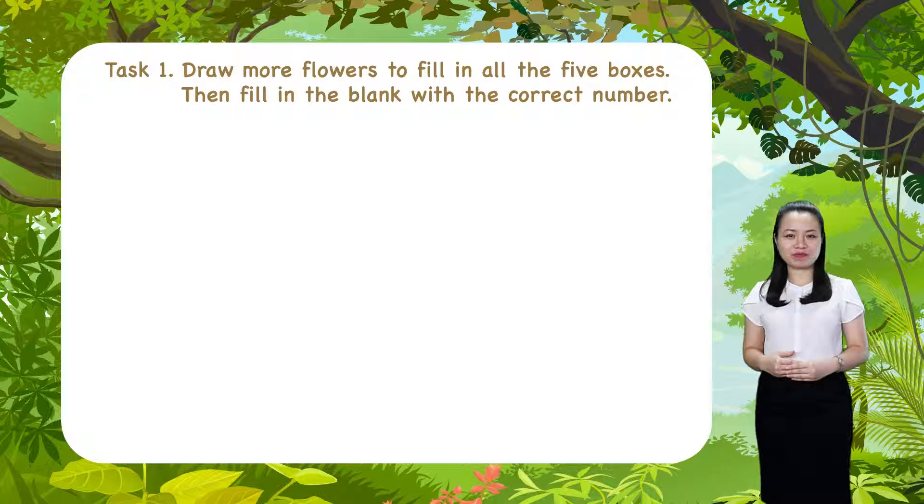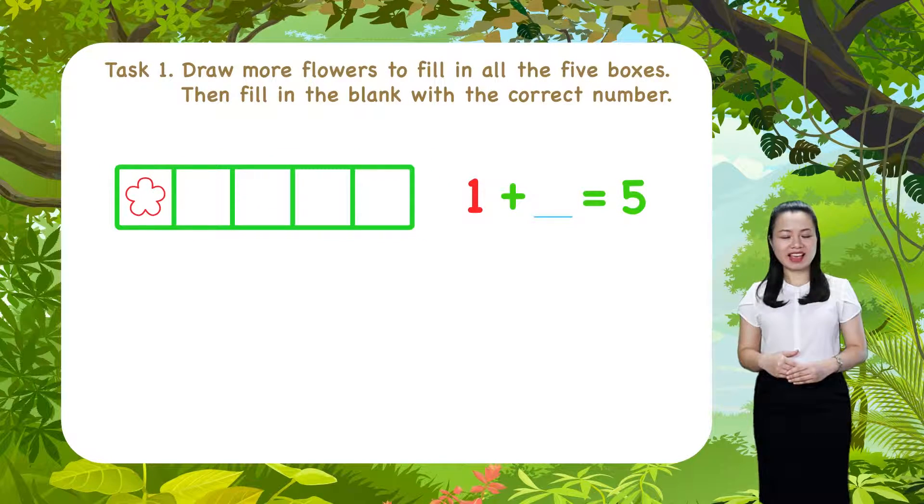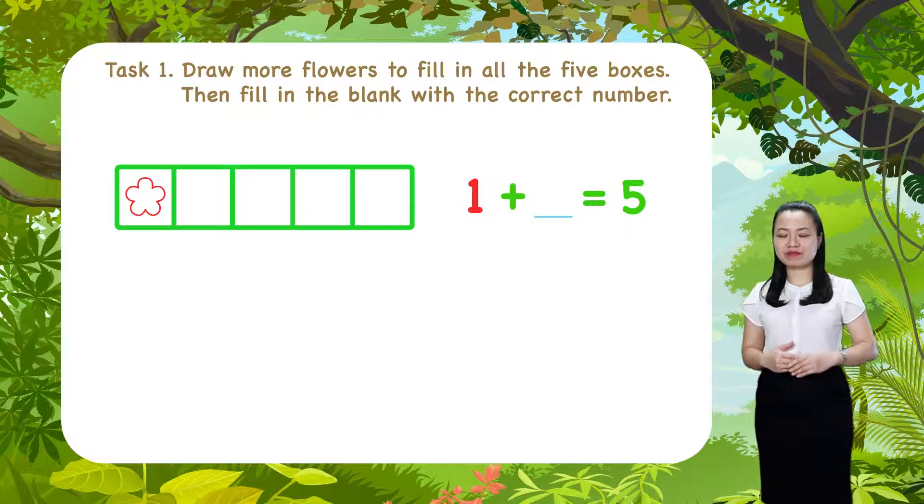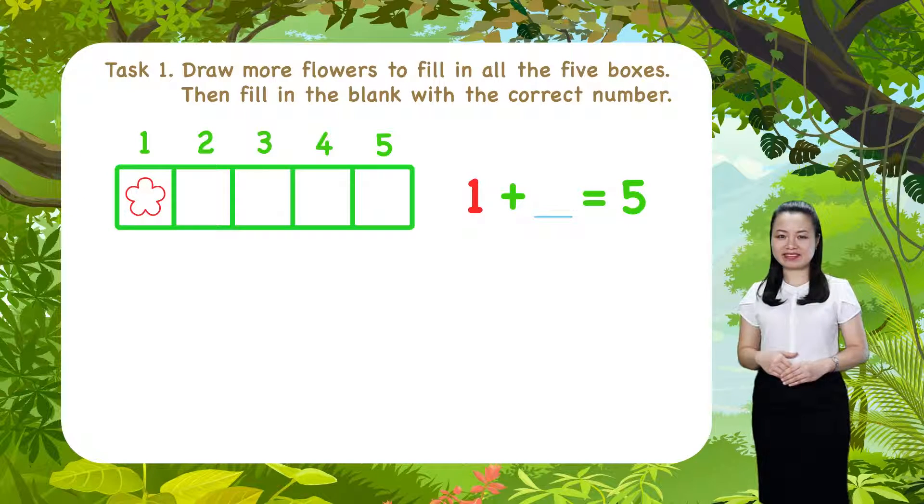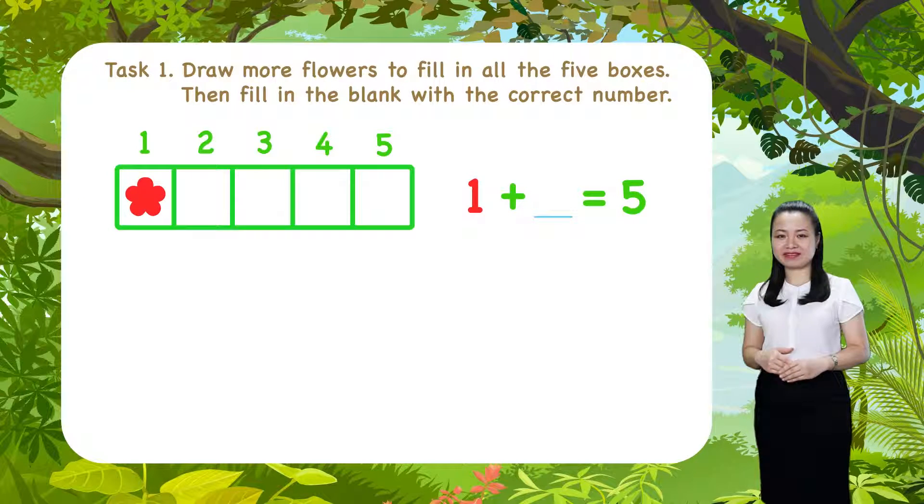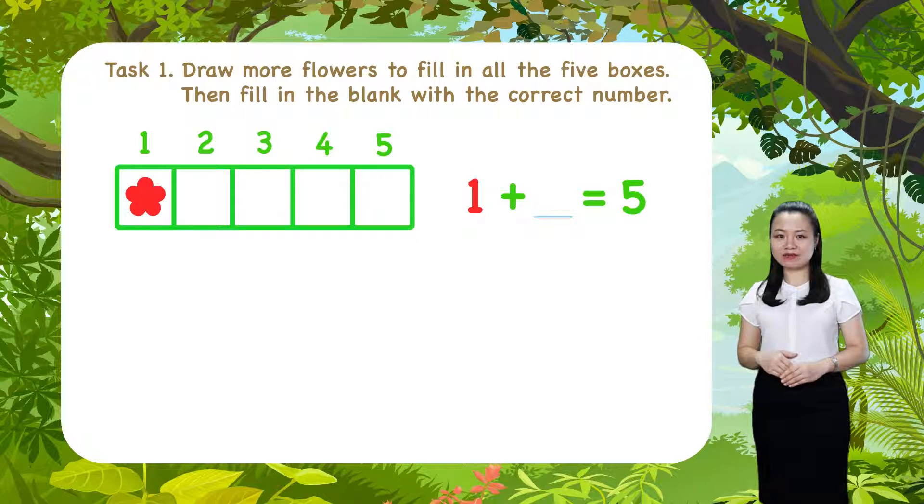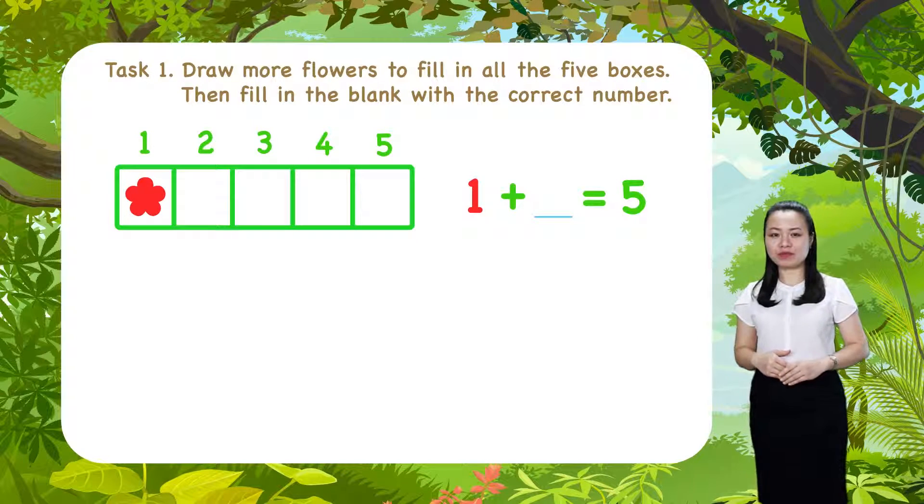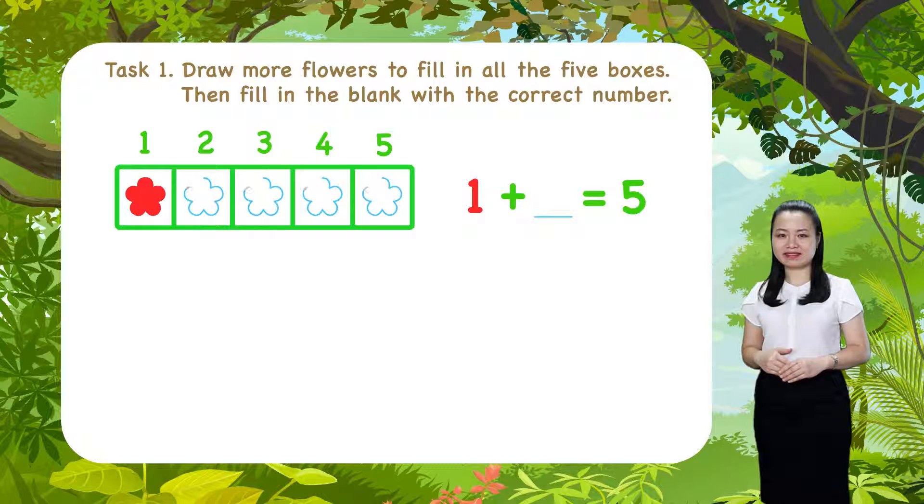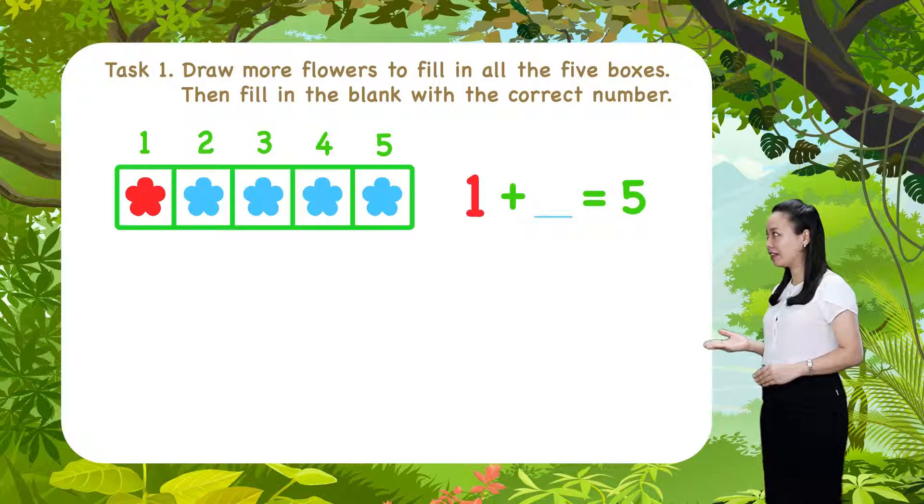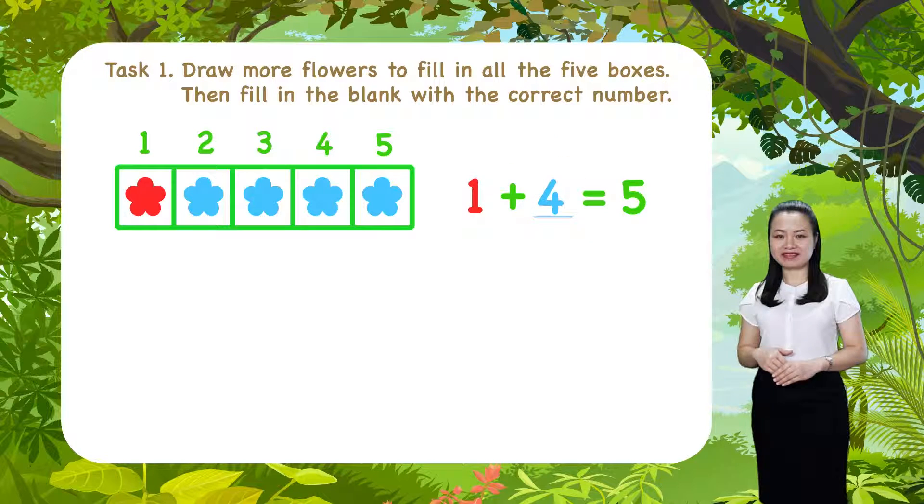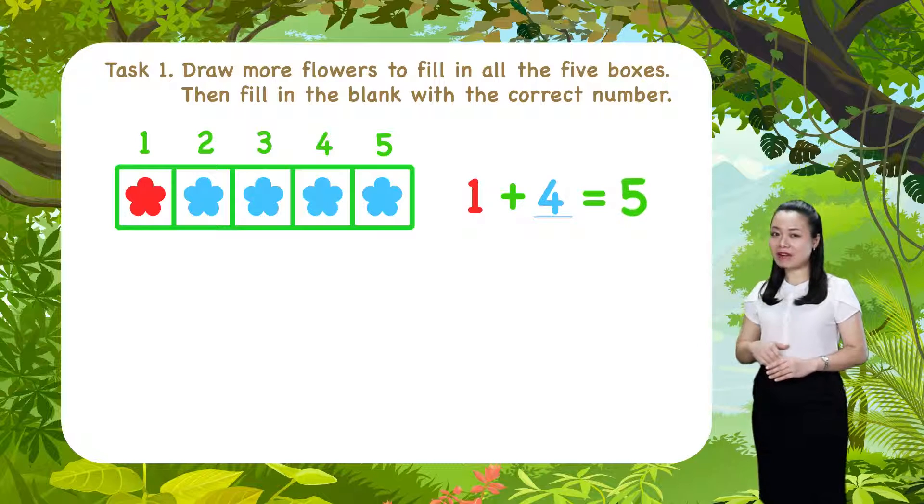Now, look at the first row. Here, we have five boxes and a flower. Let's color it red. Four boxes are still empty. Let's draw four more flowers. Color them blue. And you'll see, one plus four equals five.